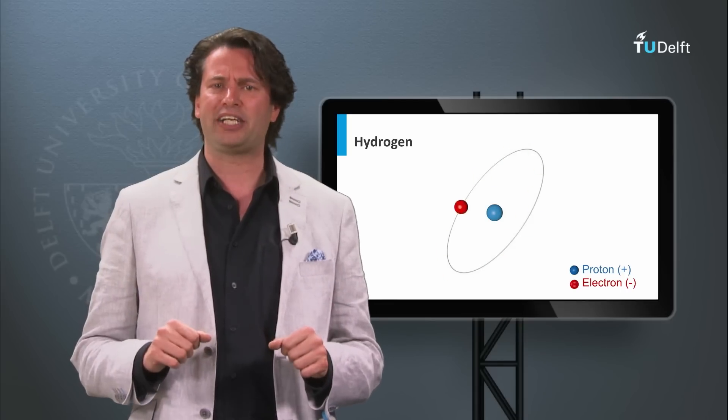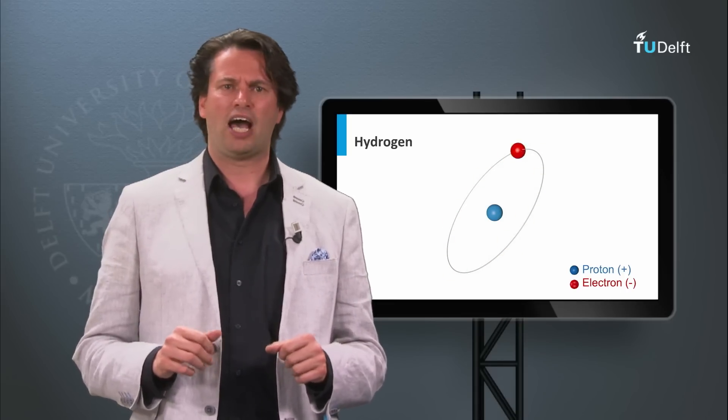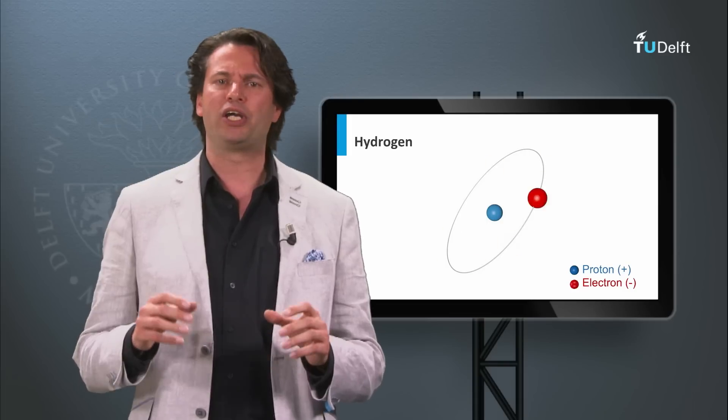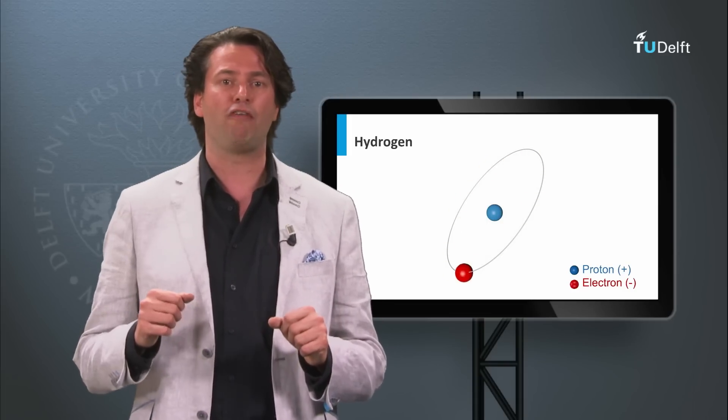First, we have to consider the question: how do electrons bond in an atom? As silicon is the most important material for current solar cells, we are going to look at how electrons are bound to the nucleus of a silicon atom.